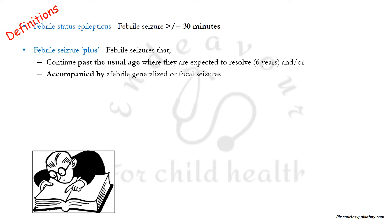Febrile seizure plus can also be accompanied by afebrile seizures, which can be generalized or focal. The generalized seizures can be of any type — tonic-clonic, atonic, myoclonic, or absence. The 'plus' term means either there is an increase in the duration or an increase in the spectrum of seizures, i.e., febrile seizures are accompanied with afebrile seizures.